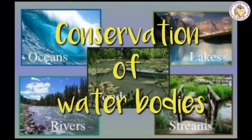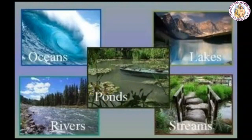Let us see the conservation of water bodies. All the water that we get comes from rain. When it rains, some water flows over the ground, giving rise to streams and rivers. Some water gets collected in low-lying areas such as ponds and lakes. The flow of the river is blocked by building a dam across it. Some rainwater seeps into the ground as underground water.